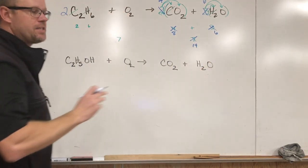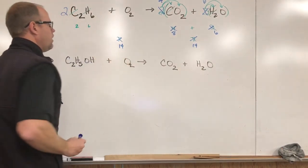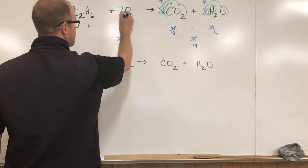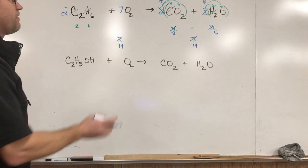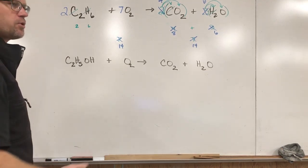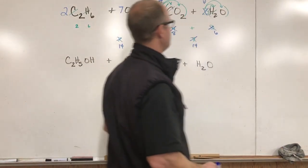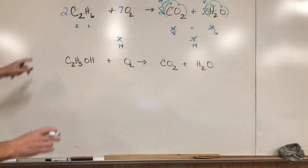This number now turns to an eight, this one turns to a six and that one turns to a 14. Everything gets twice as big. That means I need 14 oxygens on this side but now that's an even number so I can put a seven here. Seven times two gives me 14 and now the oxygen amounts are balanced. Two, seven, four, six, there's my coefficients that balance that equation.